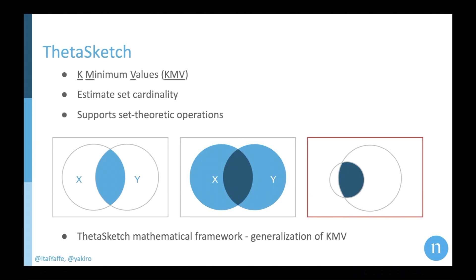With this algorithm, you can estimate set cardinality, which basically means you can get the number of unique elements in the set. And for us, the greatest benefit of this algorithm was its great support for set theoretic operations — we should also be able to calculate the union of two attributes or the intersection of two attributes.